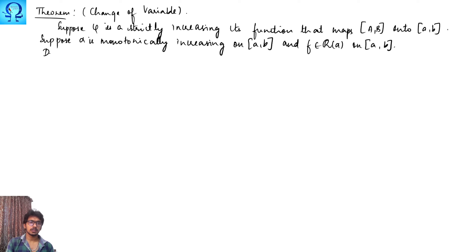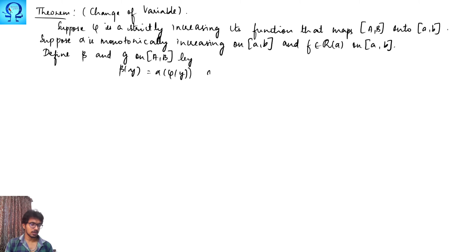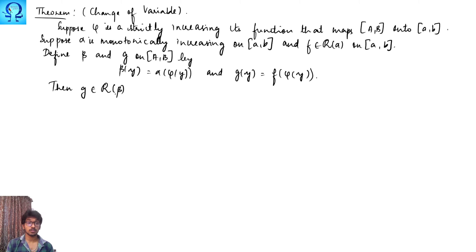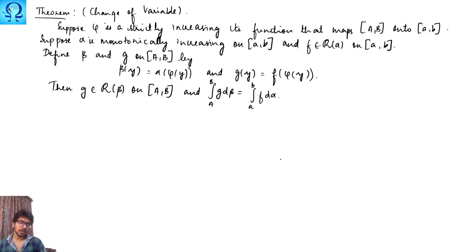And f is Riemann-Stieltjes integrable with respect to alpha on [a, b]. Further, we define beta of y as alpha of phi of y, and g of y as f of phi of y. Then we will prove that g is Riemann-Stieltjes integrable with respect to beta on the interval [A, B].